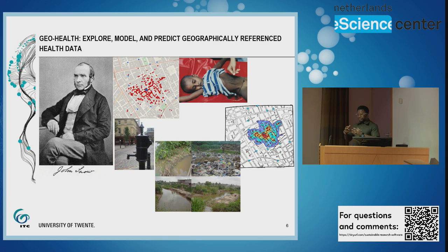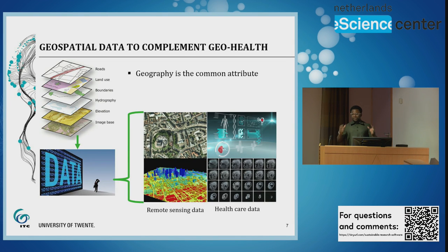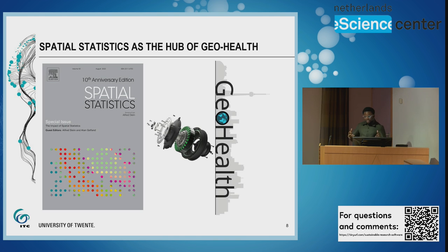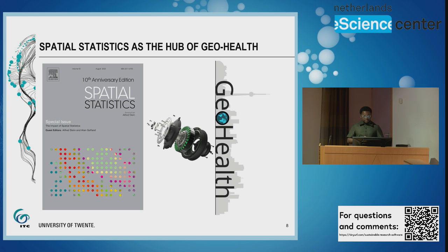Geo health is the new frontier, which also looks at exploring, modeling, and predicting geographically referenced health data — the key word here is health data. In geo health, we try to integrate different kinds of data: environmental data, socio-demographic data from different sources. To achieve this integration, spatial statistics comes in, and therefore spatial statistics is seen as a hub of geo health — geo health really cannot stand without spatial statistics.